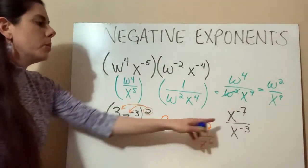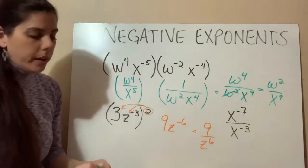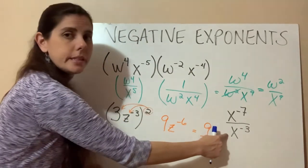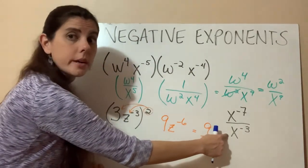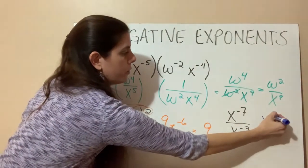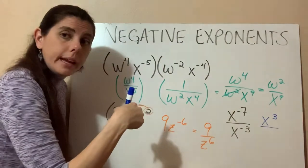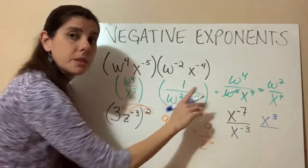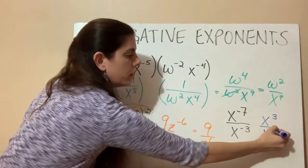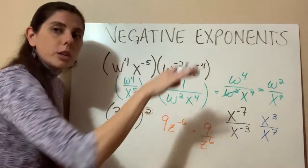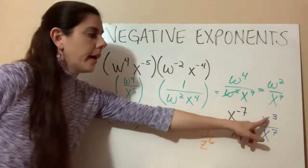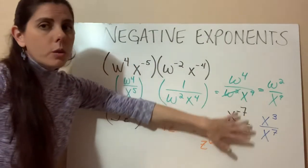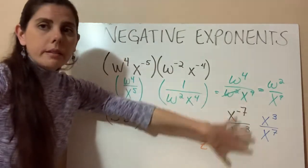In our last example, we have x to the negative 7 and x to the negative 3. So remember, taking the reciprocal means flipping, right? So right now our x to the negative 3 is on the bottom, so where is it going to move to? It's going to move to the top, and as we move it, we get rid of that negative sign. x to the negative 7 is on the top, so where is it going to go? It's going to go to the bottom, and as it moves to the bottom, it drops that negative sign. So now we have x to the 3rd over x to the 7th. We canceled out those negative signs, because we don't like negative exponents.